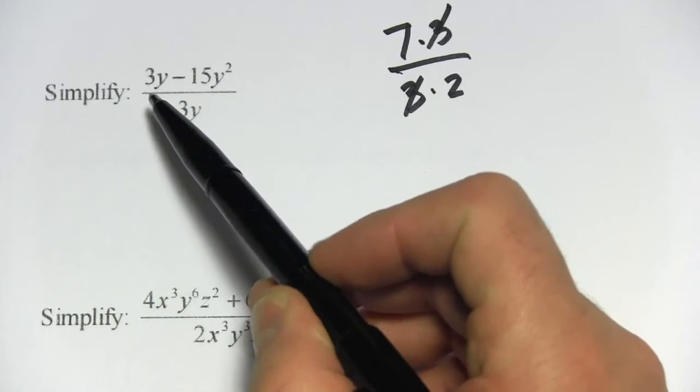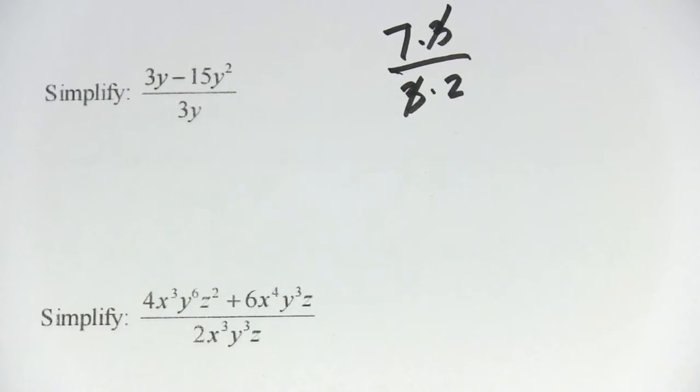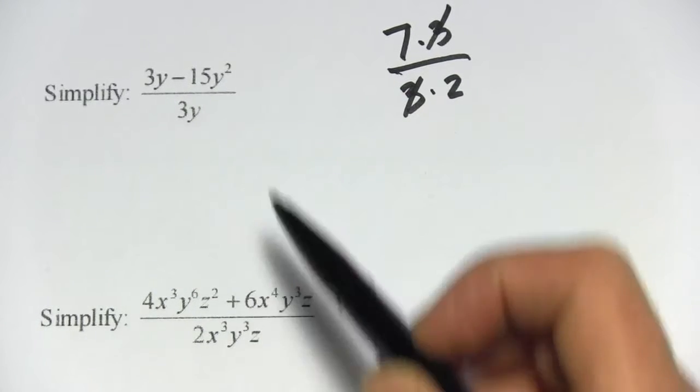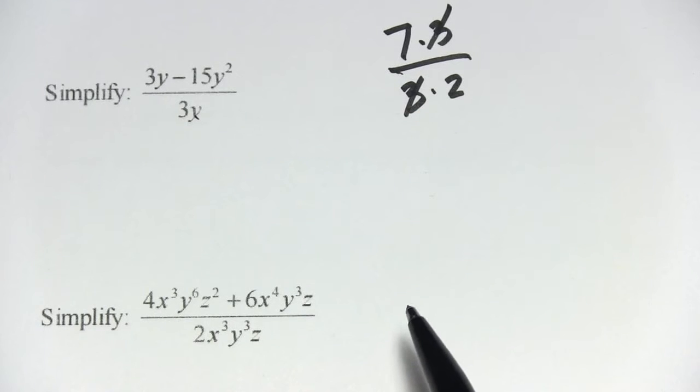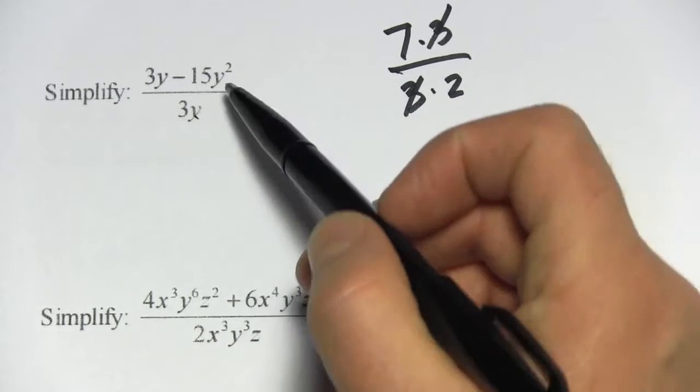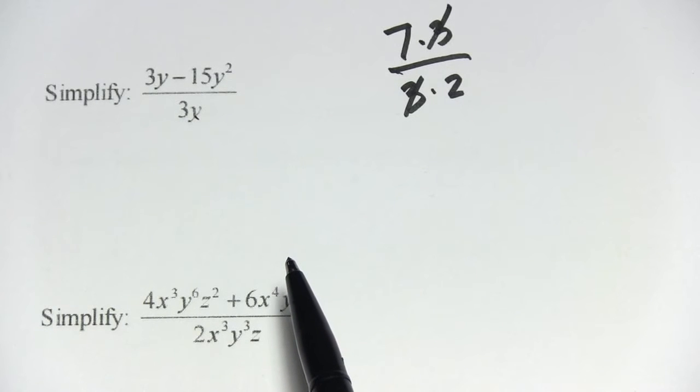In this first one, you can see a 3y on the top and a 3y on the bottom. We can't just cross those two out though, because there's a second term up here. And if you cancel with something on the bottom, you have to cancel it with each thing on the top. And the second term doesn't look like it has a 3y, so what are we going to do?